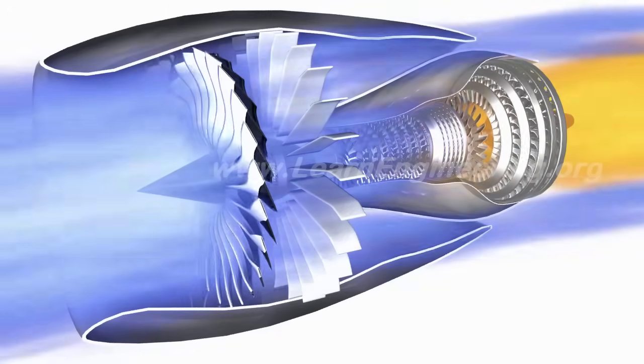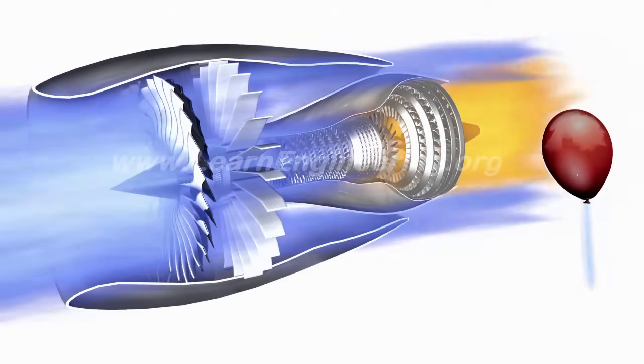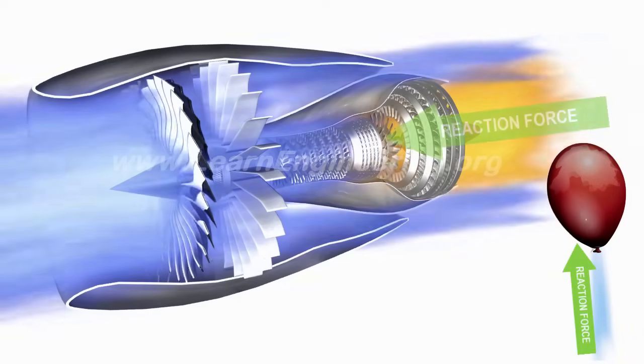A jet engine keeps an aircraft moving forward using a very simple principle, the same that makes an air-filled balloon move. Yes, Newton's third law of motion. Just like the reaction force produced by the air moves the balloon, the reaction force produced by the high-speed jet at the tail of the jet engine makes it move forward.